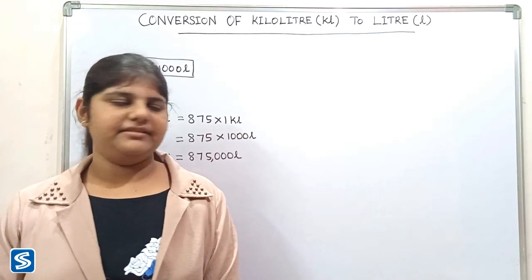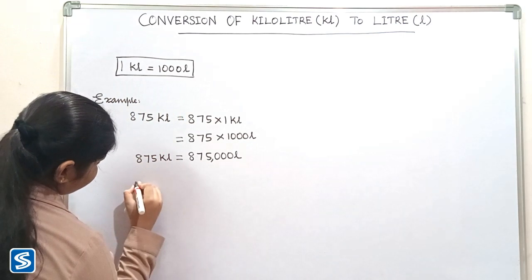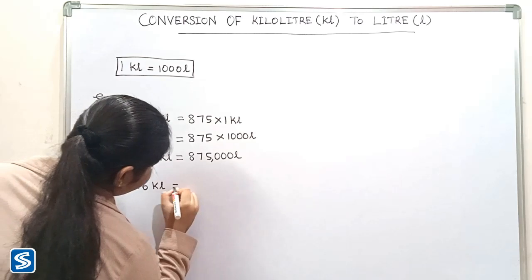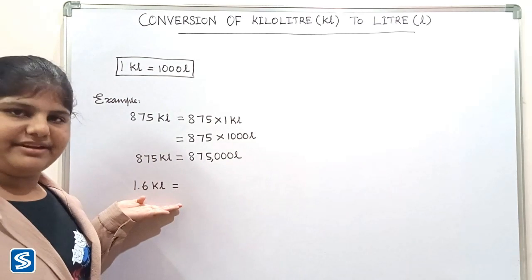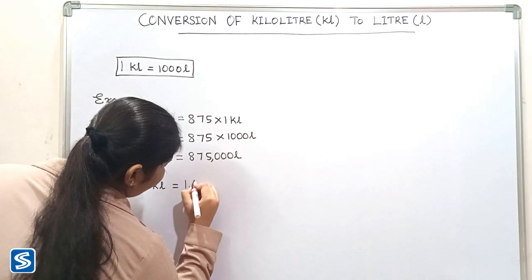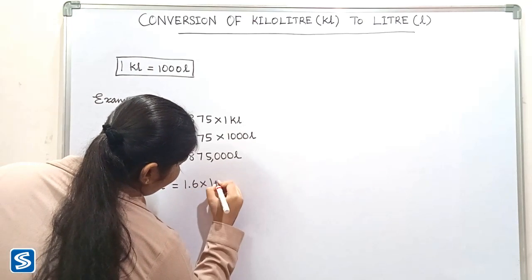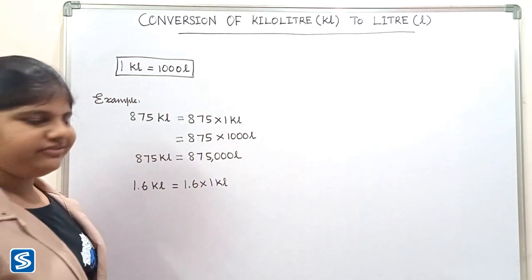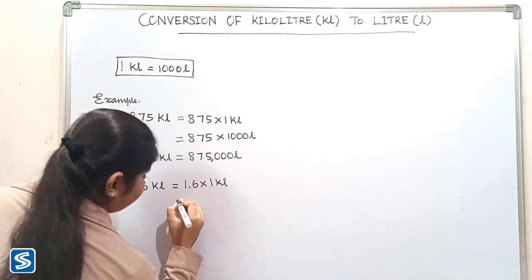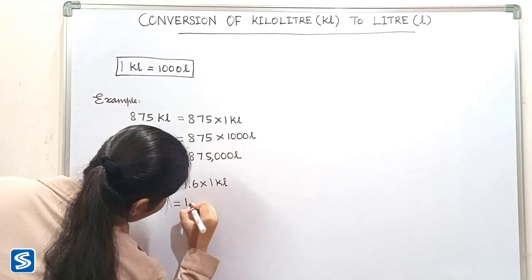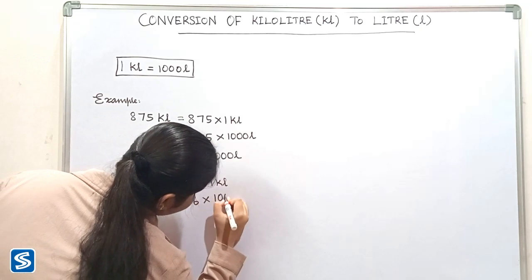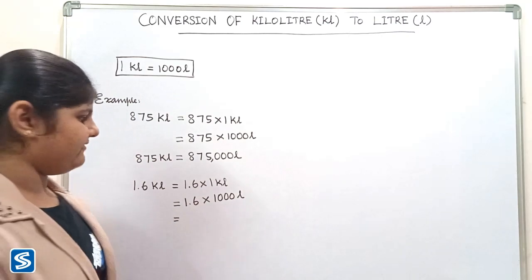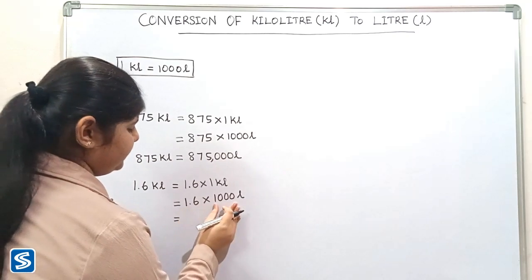Next we will take another example: 1.6 kiloliters. 1.6 kiloliters can be written as 1.6 multiply one kiloliter. Now we have to substitute one thousand liters in the place of one kiloliter, so 1.6 multiply one thousand liters. The easy way to multiply a decimal number with one thousand is to move the decimal point three places to the right.